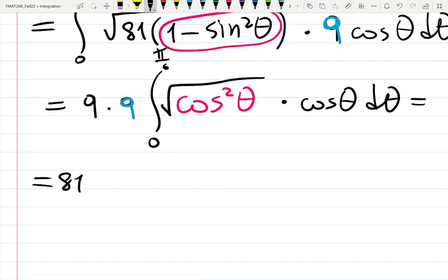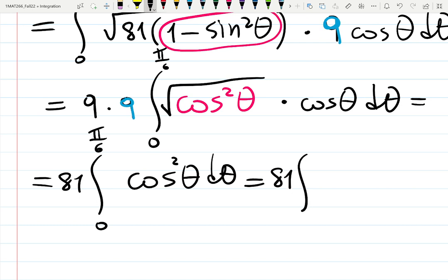9 times 9 times 9 is 81. Definite integral from 0 to π/6. You end up to have cos²θ dθ. So it did shrink into something convenient. Now the question is, how to integrate cos²θ? We learned it on Monday.